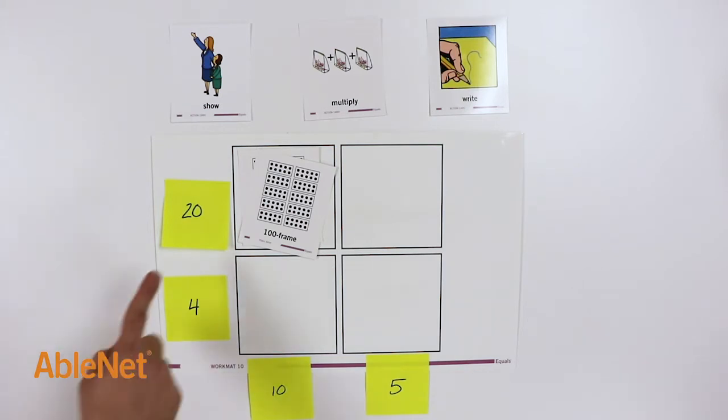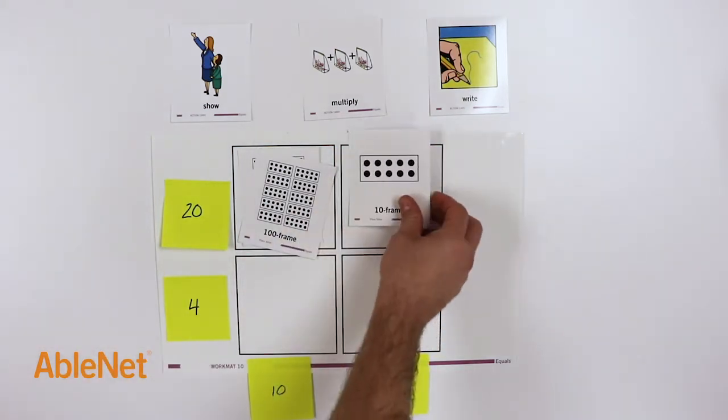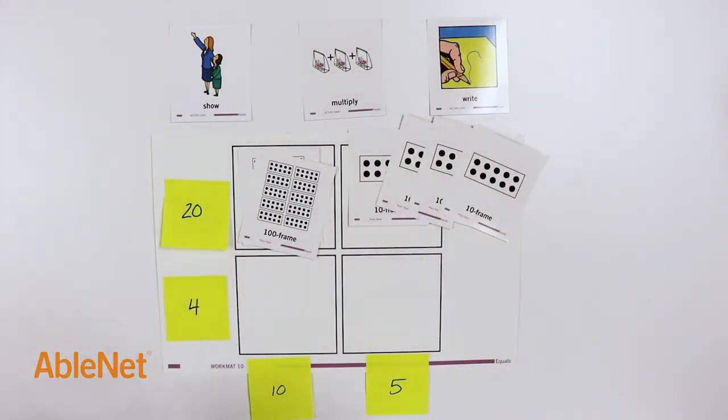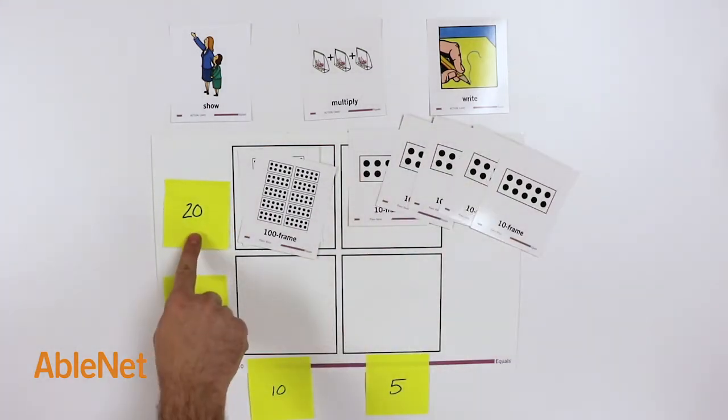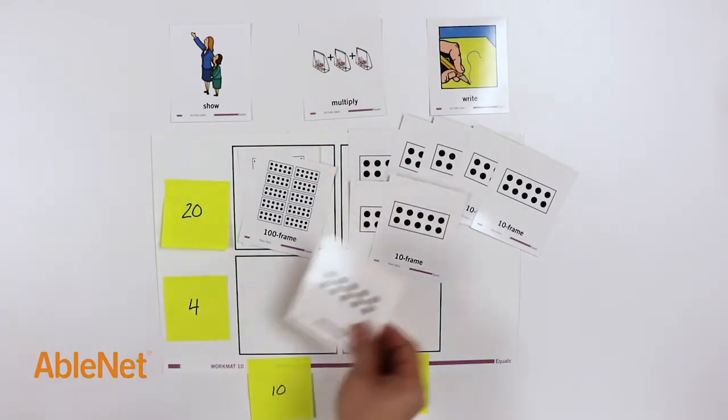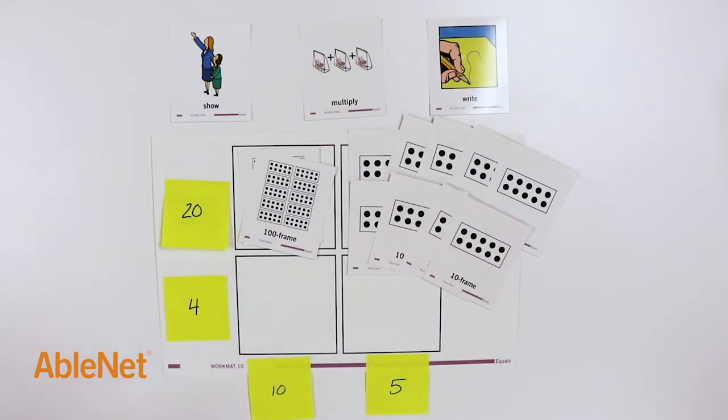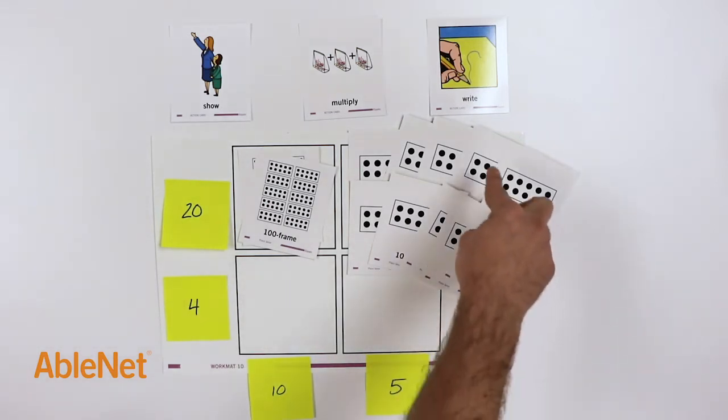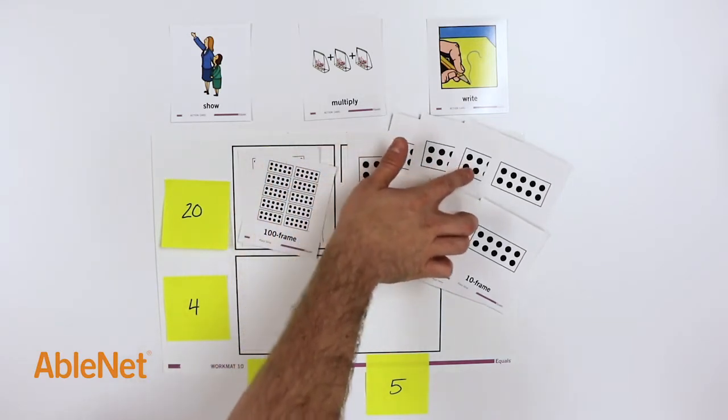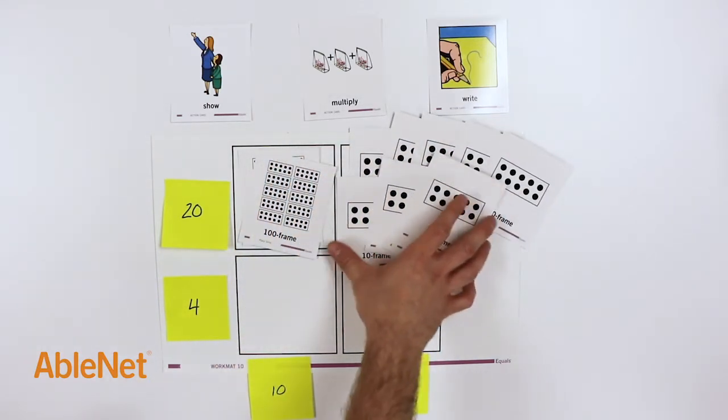Next is 20 and 5. We need 5 sets of 20, so I'm going to start by putting out 5 sets of 10, and then I'll add 5 more to make 5 sets of 20. I know there's 20 in each set, so we can count the amounts now. 1, 2, 3, 4, 5. 5 sets of 20.